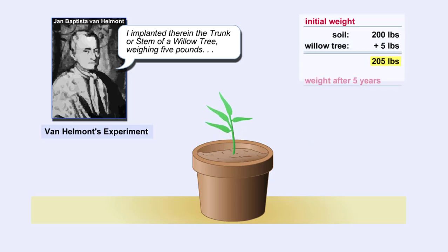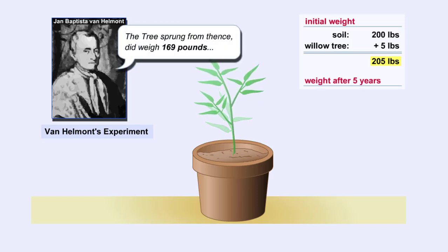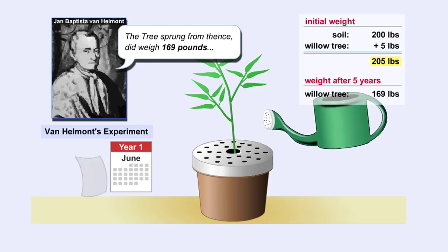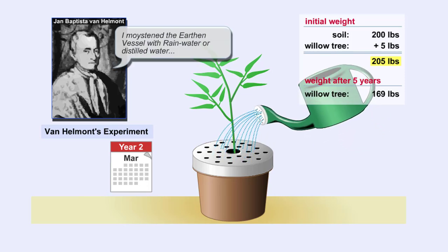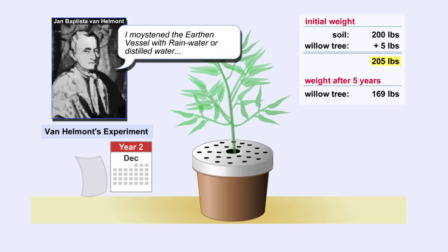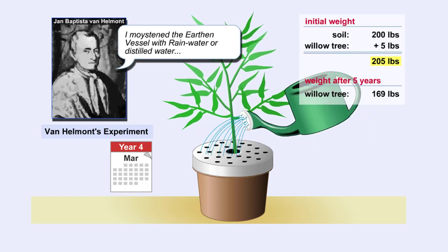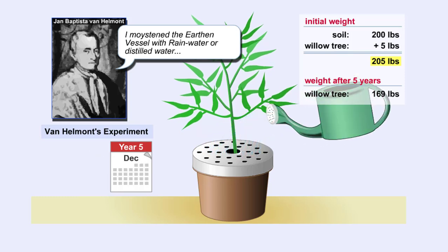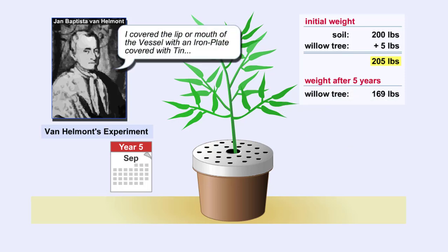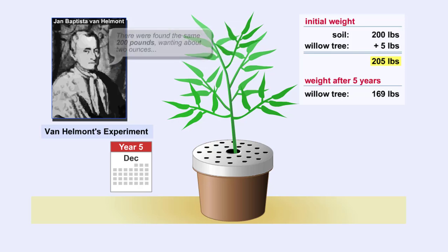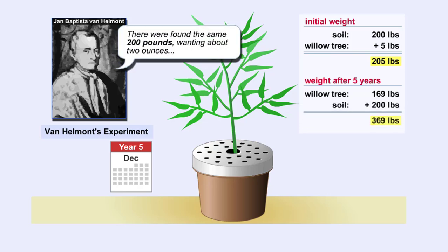"And at length, five years being finished, the tree sprung from thence, did weigh 169 pounds and about three ounces. But I moistened the earthen vessel with rainwater, or distilled water, always when there was need, and it was large and implanted into the earth, and lest the dust that flew about should be commingled with the earth, I covered the lip or mouth of the vessel with an iron plate covered with tin, and easily passable with many holes. I computed not the weight of the leaves that fell off in the four autumns. At length, I again dried the earth of the vessel, and there were found the same 200 pounds, wanting about two ounces."